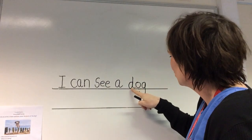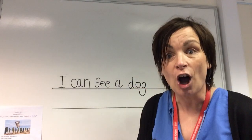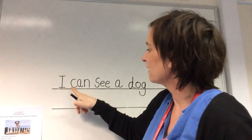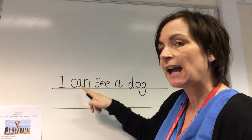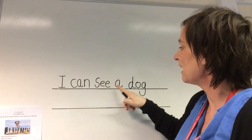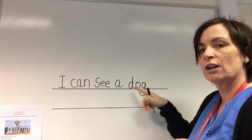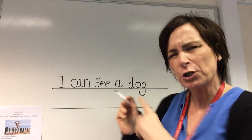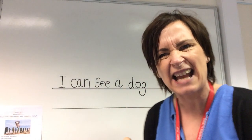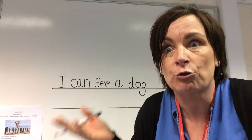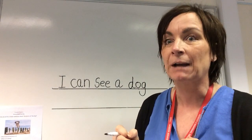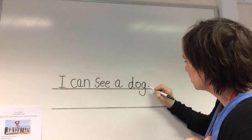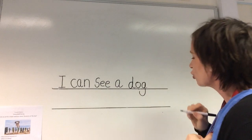Let's check. D-O-G. Dog. Let's check all of it now. I — C-A-N — can — S-E-E — see — A — D-O-G — dog. Now I have finished my sentence. What do I need to do at the end, to tell the person reading it that you've finished? It's a full stop. So it's just a little dot afterwards.